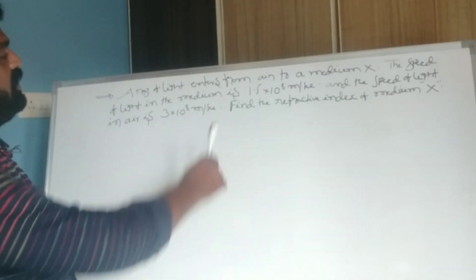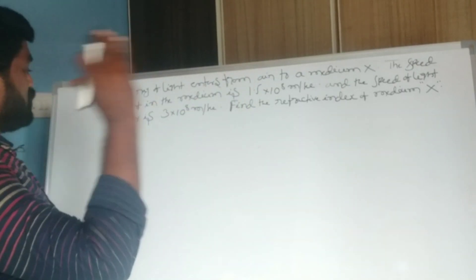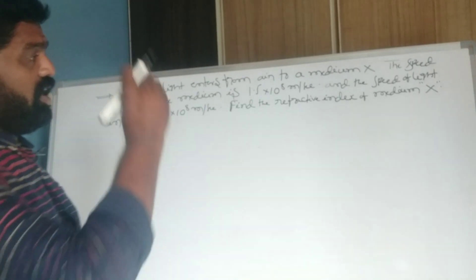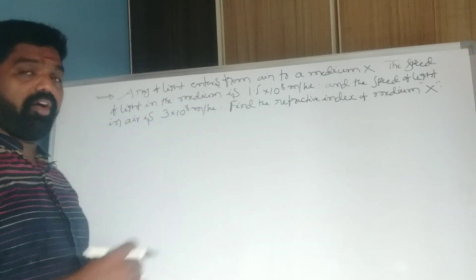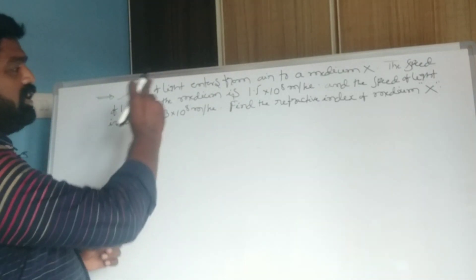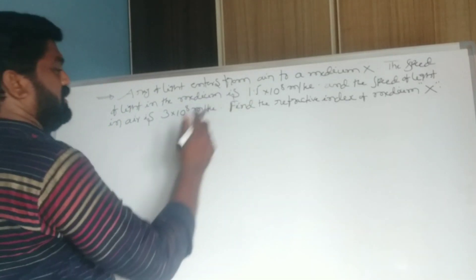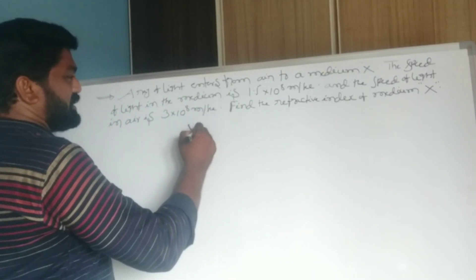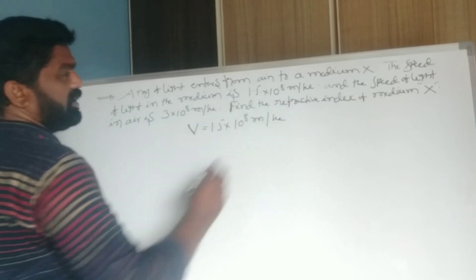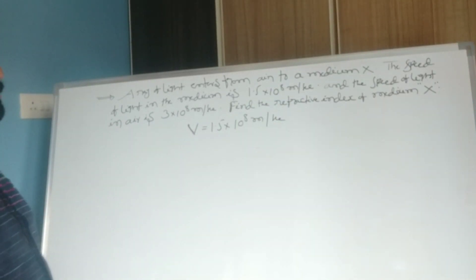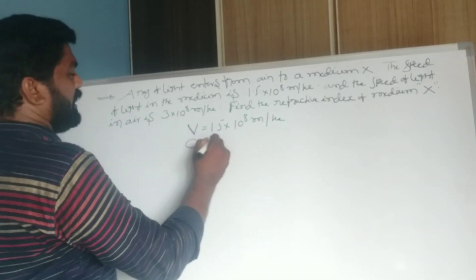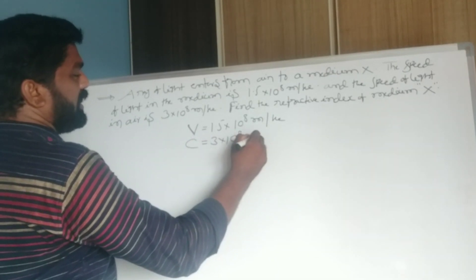Next problem: a ray of light enters from air to a medium X. The speed of light in the medium is 1.5 × 10⁸ meters per second, and the speed of light in air is 3 × 10⁸ meters per second. Find the refractive index of medium X.